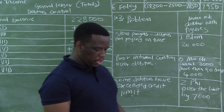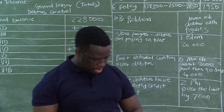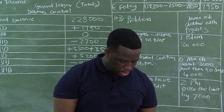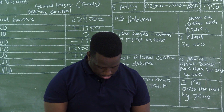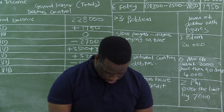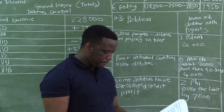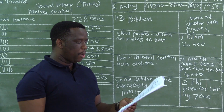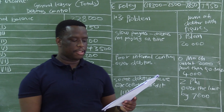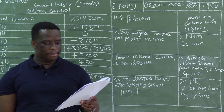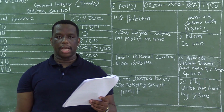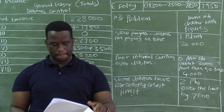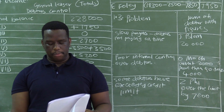The last question is 1.4. It says: refer to information D, provide two points to support the internal auditor's concern that Susan's job description could lead to potential fraud. Let's go to information D on page 5.